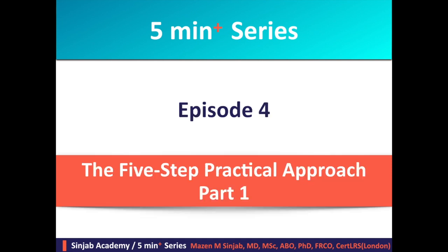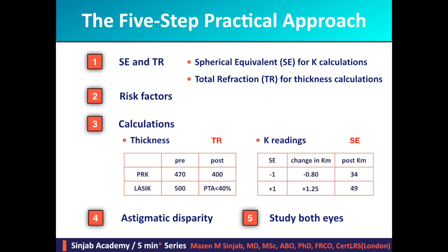In the following video I am going to start talking about the five-step practical approach, which consists of: first, determination of the spherical equivalent and total refraction. The spherical equivalent is important for K-reading calculations, while the total refraction is important for thickness calculations.